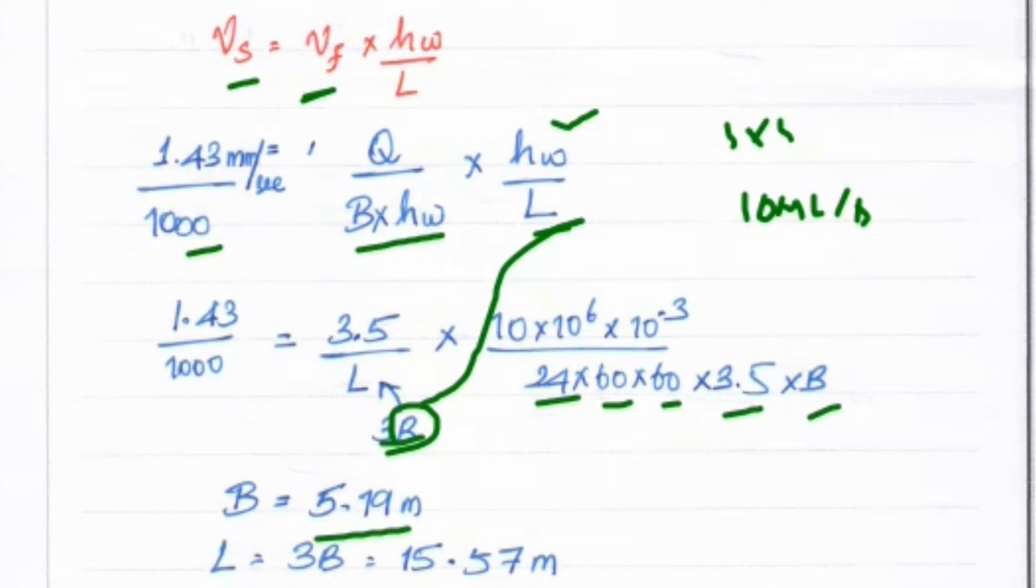We can calculate the L value. L = 3 × B, so 3 × 5.79 = 15.57 meters.